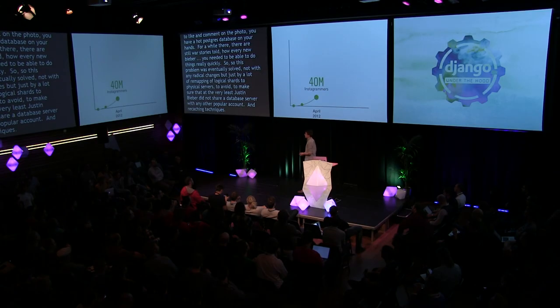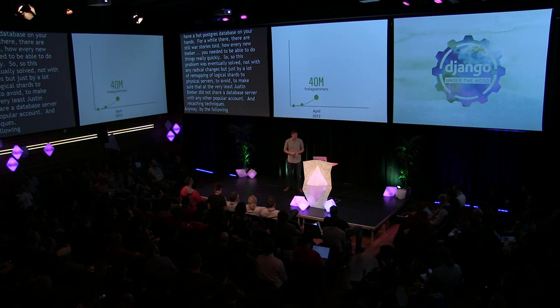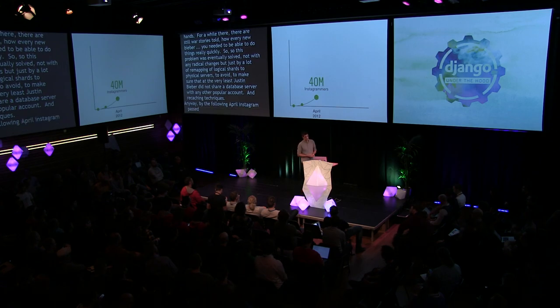This problem was eventually solved — not with any radical changes — but just by a lot of remapping of logical shards to physical servers to make sure Justin Bieber did not share a physical database server with any other popular account, along with some read caching techniques. By the following April, Instagram had passed 40 million users, and that's also when we were acquired by Facebook.